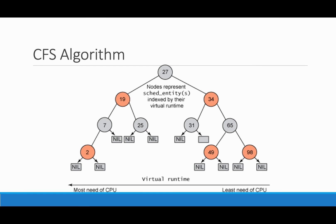This is a visual of the tree. If process 2 gets run here — it's on the very left side — it has had the least amount of CPU time out of all these processes. So it gets run, and then the CPU time it has is going to go up because it was just run, so it's going to be re-inserted into the tree farther to the right. This means that starvation doesn't occur, because processes that have not been run equally will always be moved to the left and eventually get run, so there are no processes that are just consuming all of the run time.